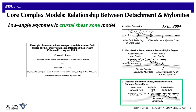Eventually, as extension continues further, the rocks that were below the brittle-ductile transition reach the surface, and the detachment fault flanks a topographic high point, surrounded by normal fault blocks that formed in the hanging wall. This model suggests that the relationship between the detachment fault and the mylonites is that they're both related to extension of the continent, with the detachment essentially capturing the brittle-ductile transition region, shown as a gray bar on the diagram.